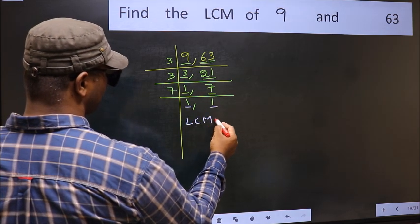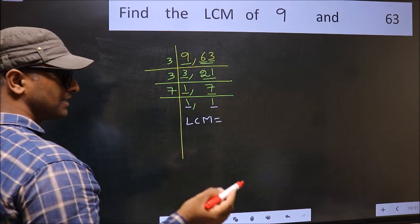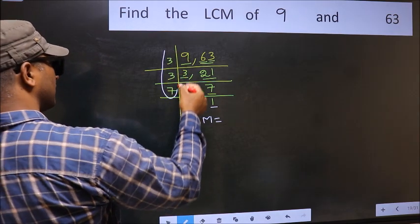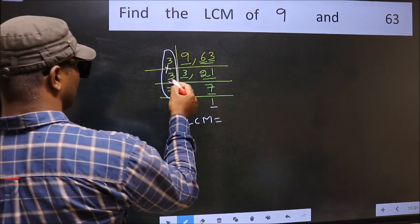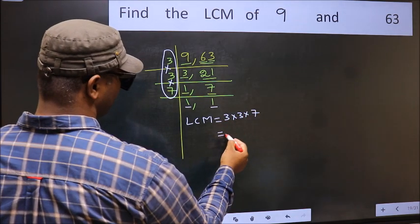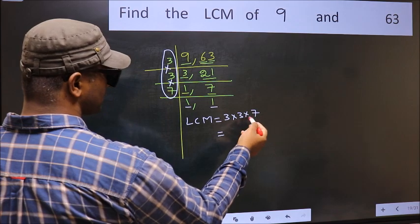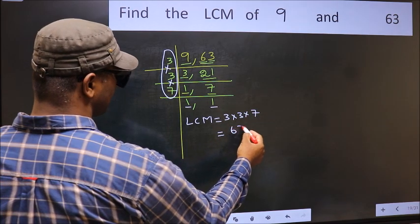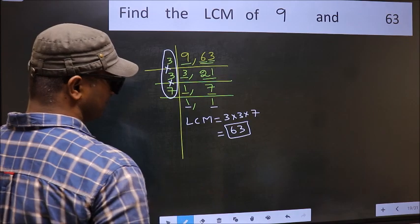So our LCM is the product of these numbers: 3 times 3 times 7. When we multiply these numbers, we get 63. This is our LCM.